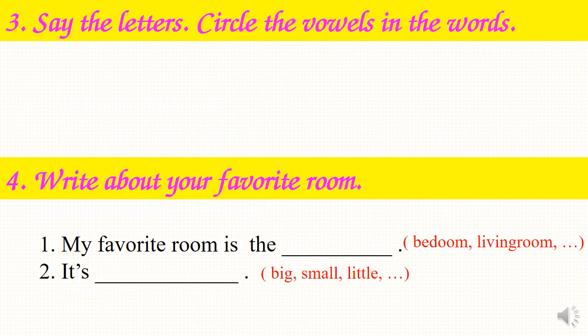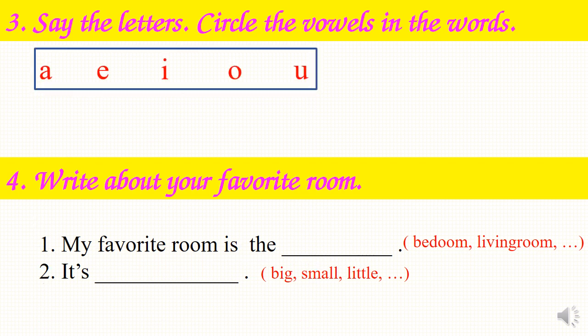You go to Part 3: say the letters and circle the vowels in the words. First, you say the letters. There are 5 letters in the box. Let's say them with me.